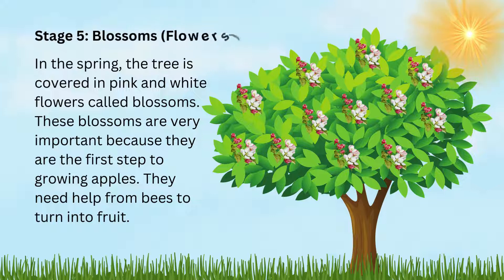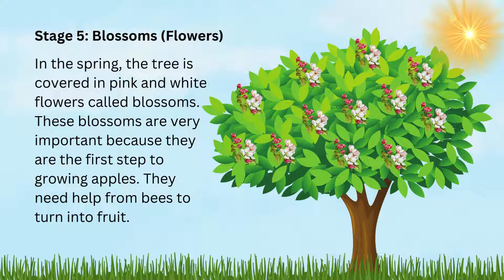Stage 5: Blossoms — Flowers. In the spring, the tree is covered in pink and white flowers called blossoms. These blossoms are very important because they are the first step to growing apples. They need help from bees to turn into fruit.